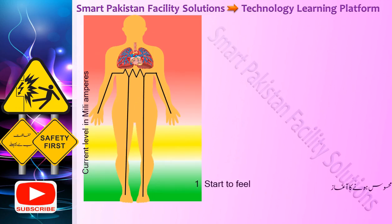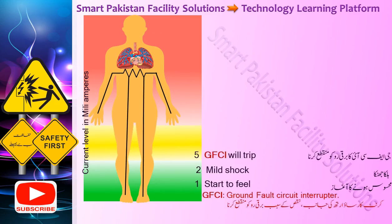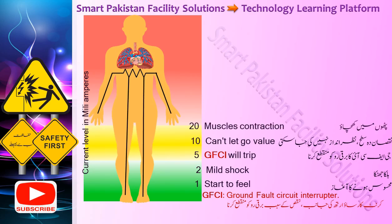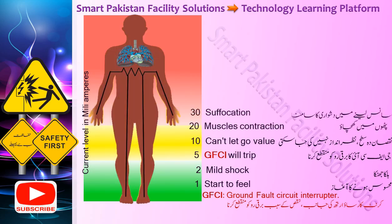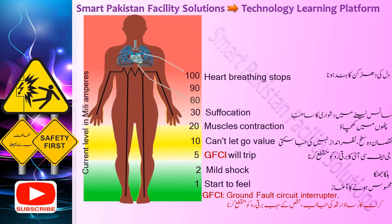At the start-to-feel level, a mild shock is felt. At the ground fault circuit interrupter trip level, the can't-let-go value is reached, causing contraction of muscles. Suffocation is felt, and trouble in heart breathing occurs or breathing stops.